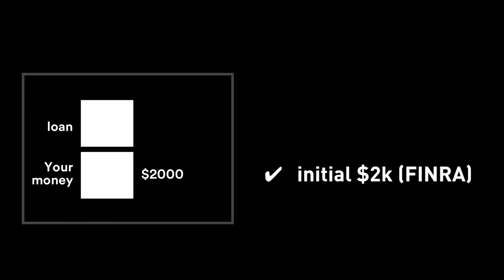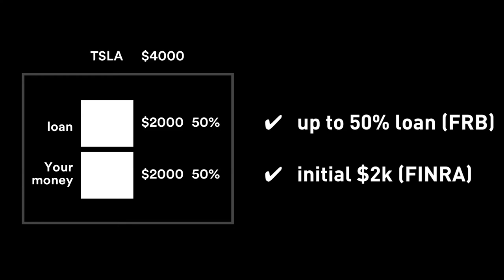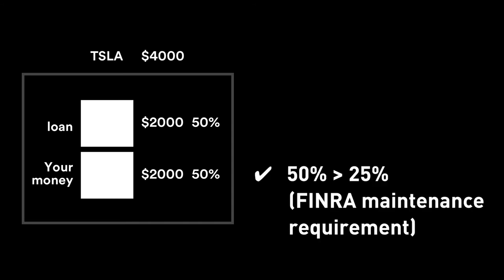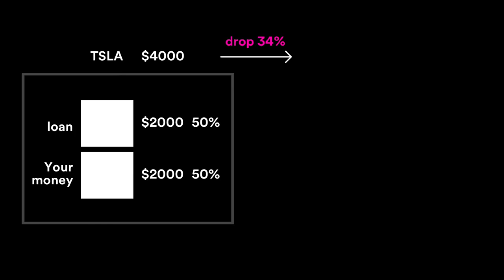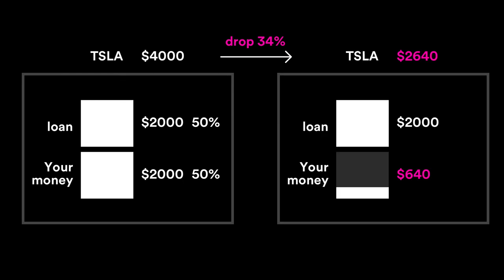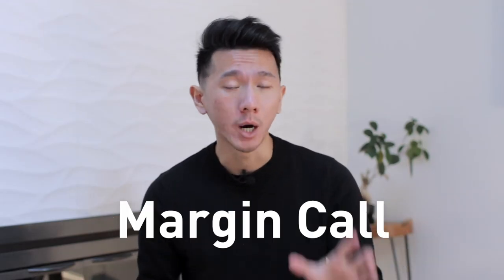FINRA sets the maintenance margin requirement at 25%, which I call the trouble number. Let's say you start with $2,000, meet the initial margin requirement, borrow up to $2,000, and buy $4,000 worth of Tesla. 50% of that $4,000 is the loan, and the other 50% is your money — 50% is higher than 25%, so you're good. What is not good is that your 50% can drop really fast. If Elon tweets again and Tesla drops more than 34%, your 50% will drop below the 25% maintenance margin requirement set by FINRA, and you will be in trouble — that's why I call this the trouble number.